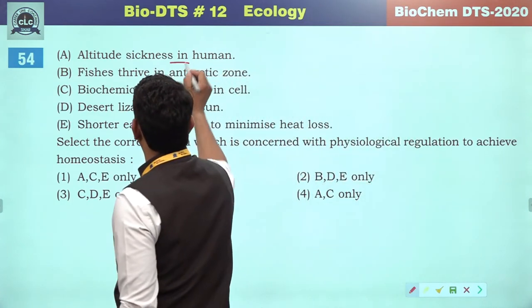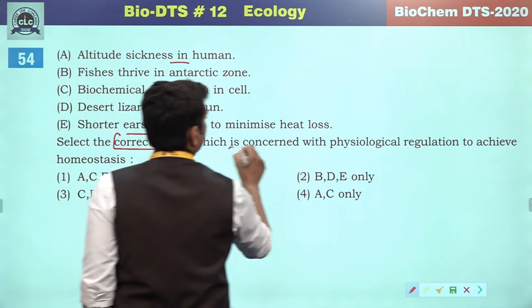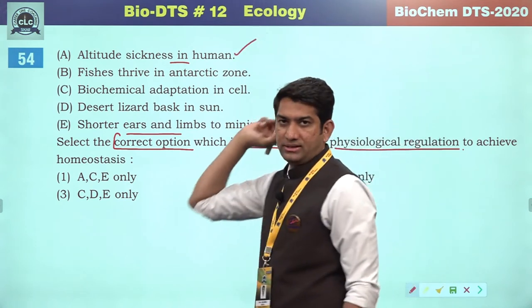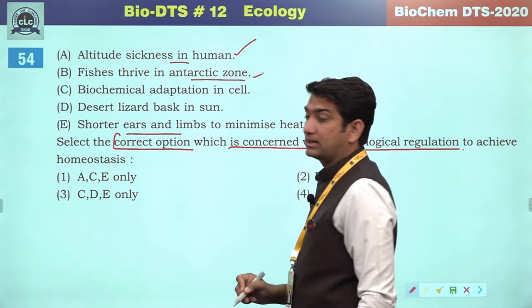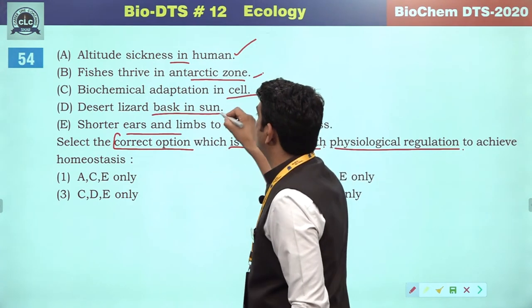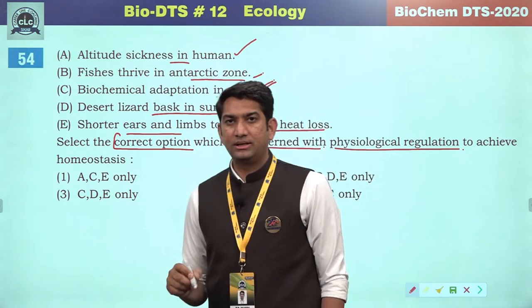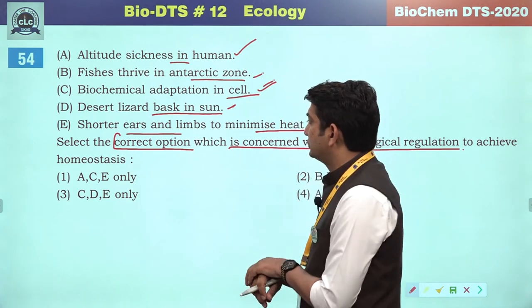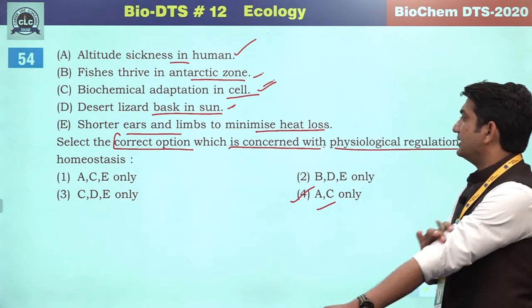Altitude sickness in humans — look at statements concerned with physiological regulation. Altitude sickness is a quick responding behavior of the human body — physiological. Fish thriving in Antarctic zone — biochemical adaptation. Desert lizard — behavioral adaptation. Shorter ears and limbs to minimize heat loss — this is not physiological regulation. The blubber layer acts as an insulator. So the correct references are A and C.